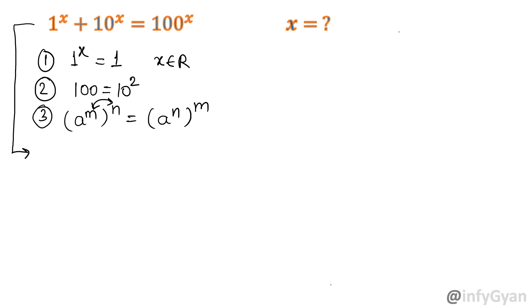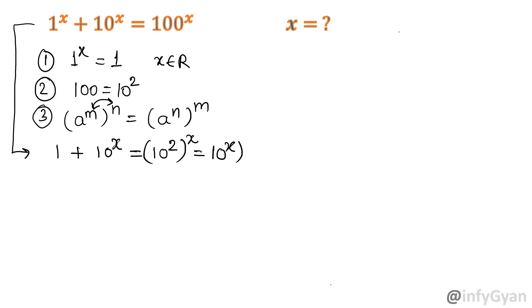So the equation will be 1 plus 10^x is equal to 10 power 2 power x. Applying the third exponent rule, this becomes 10^x whole squared. Now let us put 10 raised to the power x equal to y.